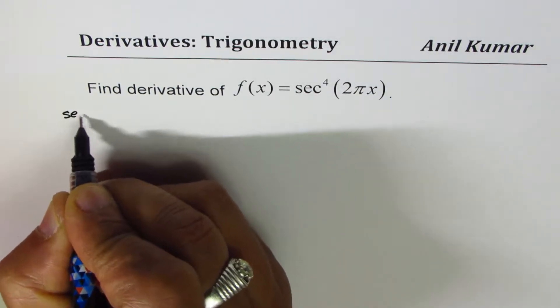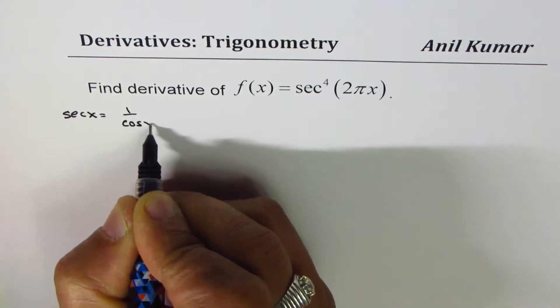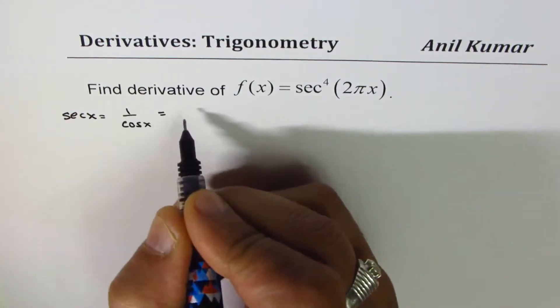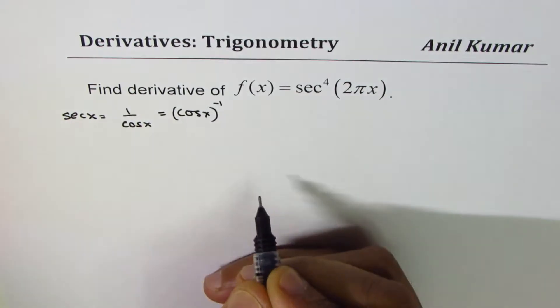As you know, secant x could be written as 1 over cos x. Or you could say cos x to the power of minus 1.